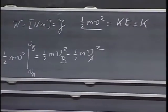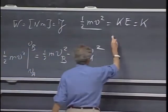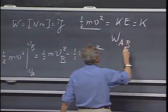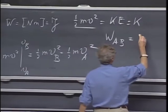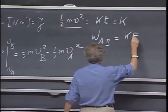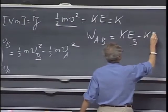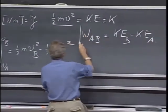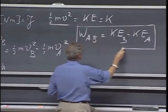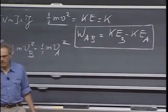And so the work that is done when a force moves from A to B is the kinetic energy in point B, minus the kinetic energy in point A. And this is called the work energy theorem.